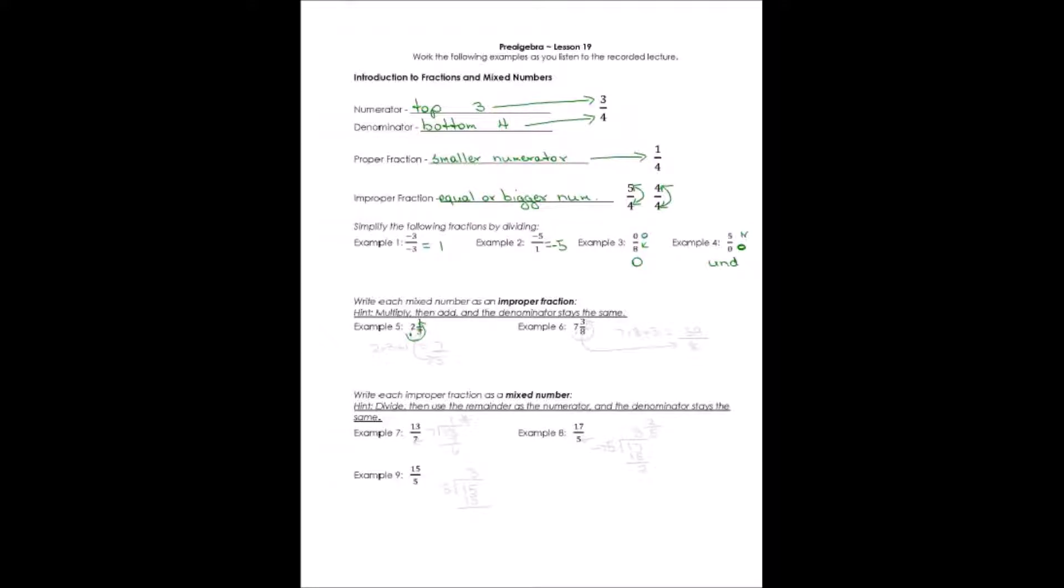In other words, I'm going to say 2 times 3 plus 1. Well, 2 times 3 is 6, plus 1 gives me a 7. Where do I put it? Well, I put it as the numerator. What do I use as a denominator? The denominator never changes. Whatever the denominator of that fraction is, that's what it is. Now, I would simplify it if I needed to, but I don't need to. So the answer, 2 and 1 third, is really 7 thirds.